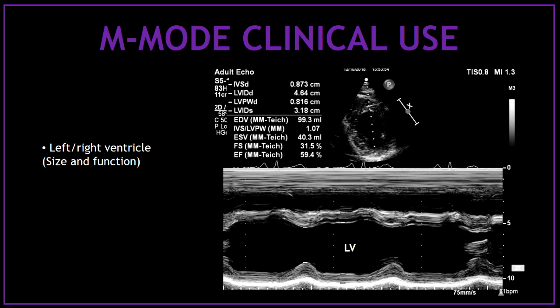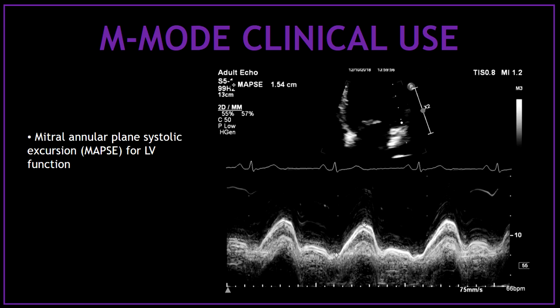Also, in every scan we use the M-mode to measure the longitudinal systolic function of the left ventricle. You can measure the systolic excursion of the mitral annular plane, also known as MAPSE. This is an index for left ventricular function. You can measure the MAPSE on the lateral annulus as well as on the septal annulus.